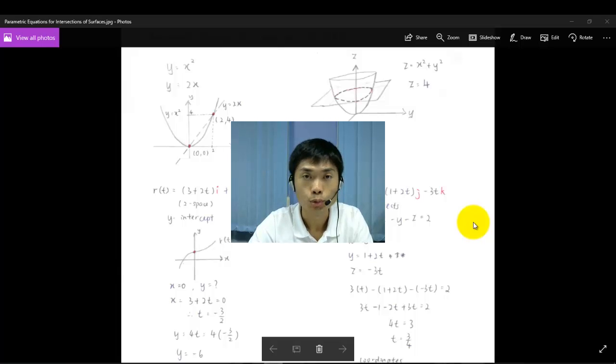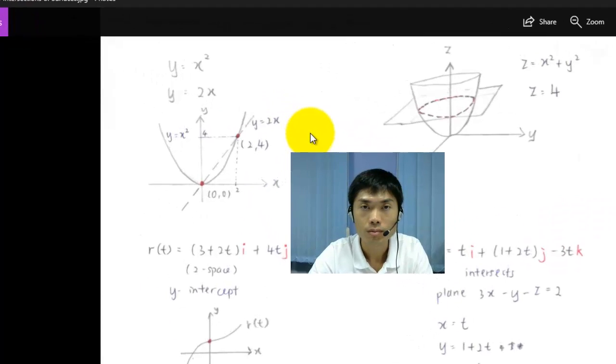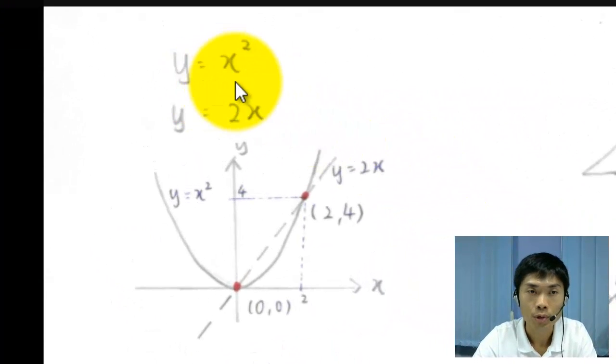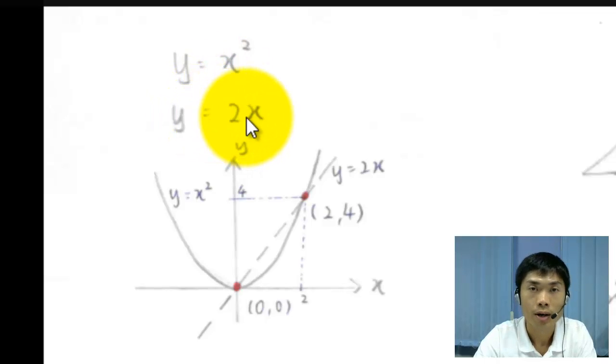Recall back from your 2D two-space equations. When you are given y equals x squared and y equals 2x, you are asked to find out the intersection points between the two curves. In order to solve it, first I sketch out the curve of y equals x squared and y equals 2x.